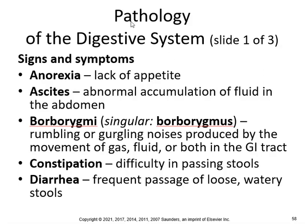Here's pathology — some signs and symptoms that you might see. Anorexia is lack of appetite. Ascites is abnormal accumulation of fluid in the abdomen. Borborygmi — rumbling or gurgling noises produced by the movement of gas, fluid, or both in the GI tract. Usually when you're taking a test and everyone's quiet, you actually hear those noises. So that's called borborygmi.